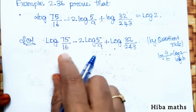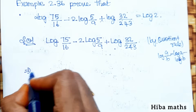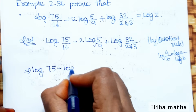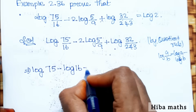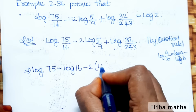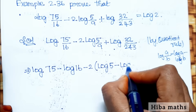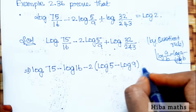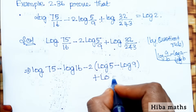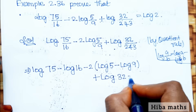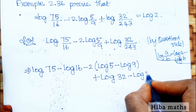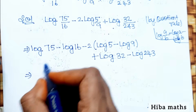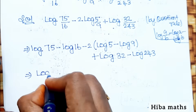Expanding using the quotient rule: log 75 minus log 16, then minus 2 times (log 5 minus log 9), plus log 32 minus log 243. This is the first step.